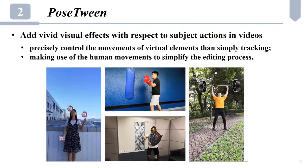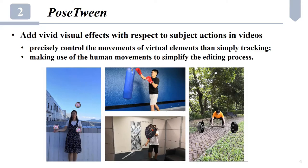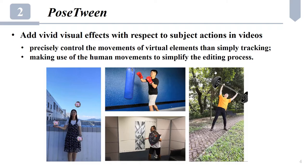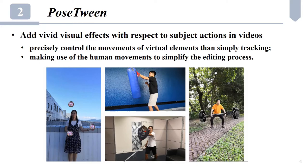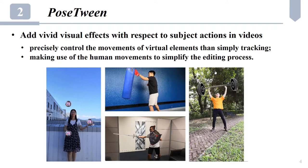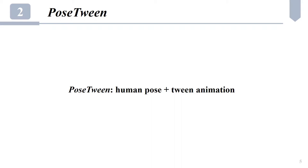In this work, we aim at studying how to easily add virtual elements that interact with the moving subject in a video. Our goal is to precisely control the movements of virtual elements to achieve more natural interactions with the subject than only tracking. On the other hand, since the human body is flexible to depict complex motion paths, we can also use the human movement to roughly guide the movement of virtual elements to simplify the visual effects editing process.